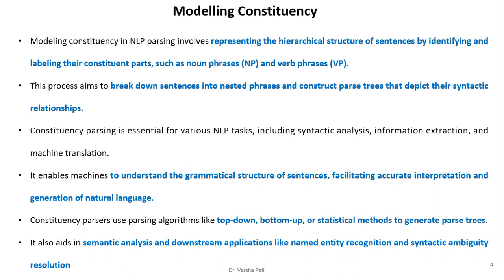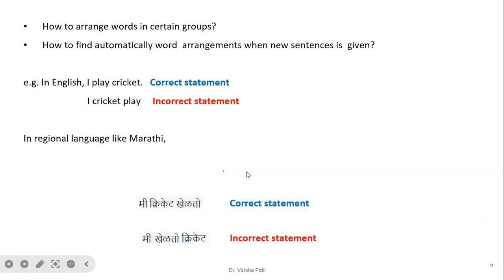Modeling constituency in NLP parsing involves representing the hierarchical structure of a sentence by identifying and labeling constituent parts such as noun phrases and verb phrases. This process aims to break down sentences into nested phrases and construct a parse tree that depicts their syntactic relationships. It is essential for NLP tasks like syntactic analysis, information extraction, and machine translation. It enables machines to understand grammatical structure, facilitating accurate interpretation and generation of natural language using parsing algorithms like top-down, bottom-up, and statistical approaches.